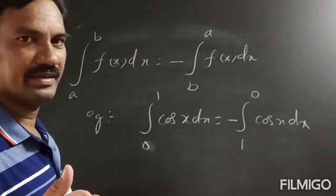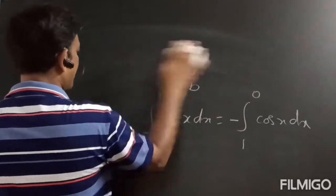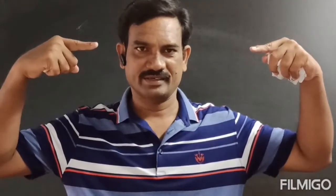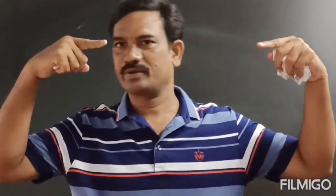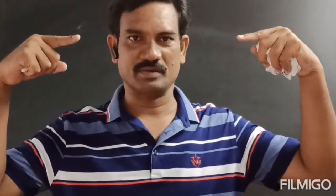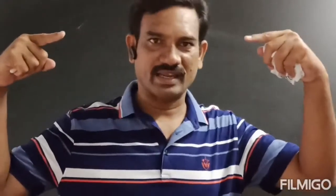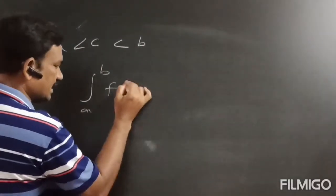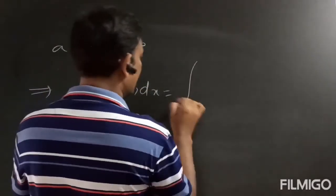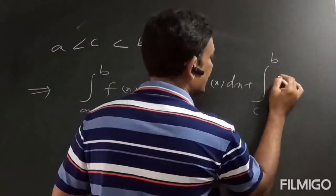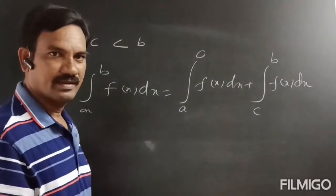Now let's discuss the third property. If there is any value C between the lower limit a and upper limit b, we can split the integral. Integration a to b of f(x)dx is equal to integration a to C of f(x)dx plus integration C to b of f(x)dx. So with the help of C, we are splitting the interval A to B.